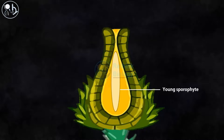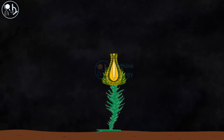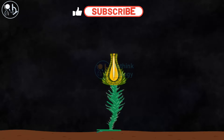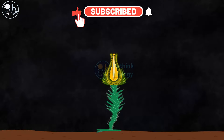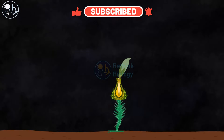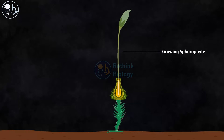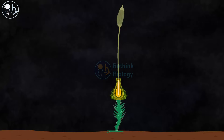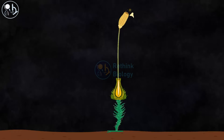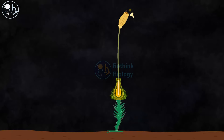The sporophyte continues to grow and finally comes out by cracking the archegonia. The growing sporophyte is protected by a cap-like tissue at the tip called the calyptra. Beneath the calyptra is a spore-filled structure known as the sporangium. Haploid spores are produced by mitotic division of the sporophyte and are released when the top of the sporangium is shed.